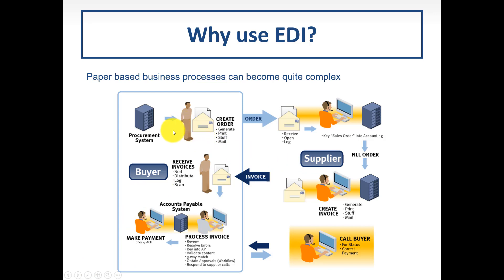First, the buyer must query the procurement system to create an order. This is then printed, placed in an envelope, and mailed to the supplier. The paper-based order is received by the supplier, who enters the sales order into their own accounting system. From there, the supplier creates an invoice, prints it, places it in an envelope, and mails it back to the buyer.